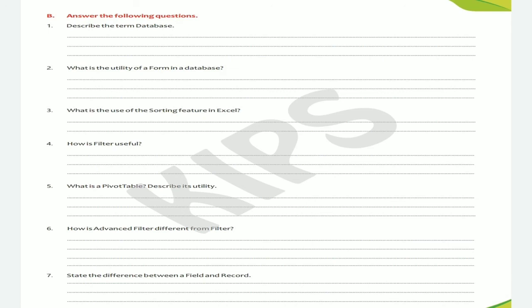Seventh: state the difference between a field and a record. Field is a column in a database that contains only one type of data. Whereas a record is a row in a database, which consists of the information about one person or one object.